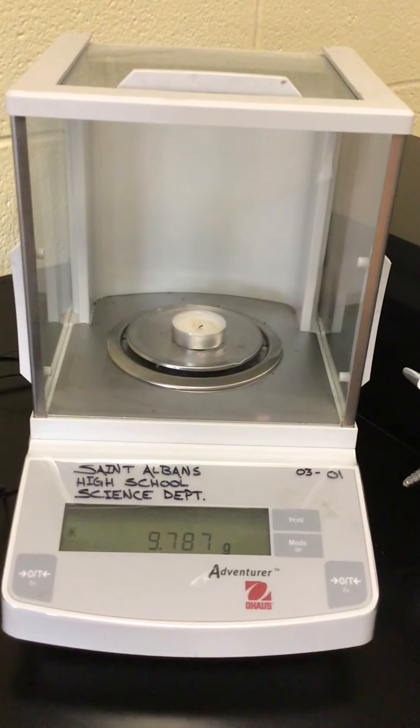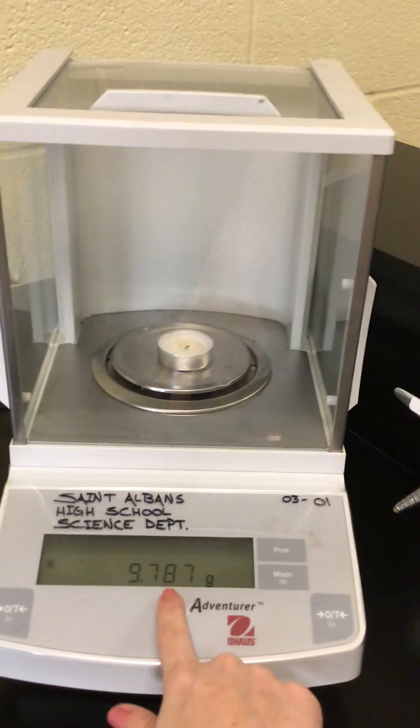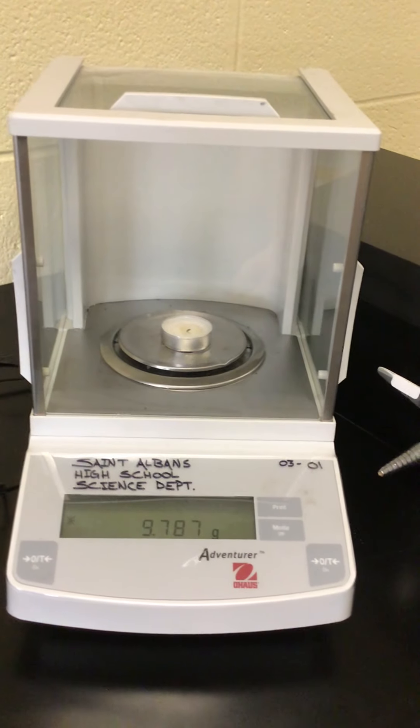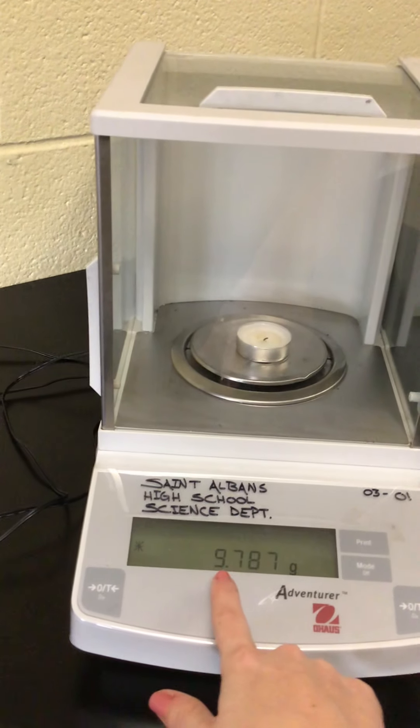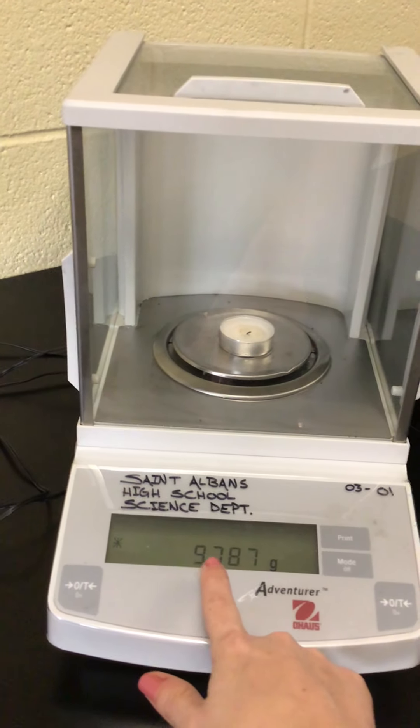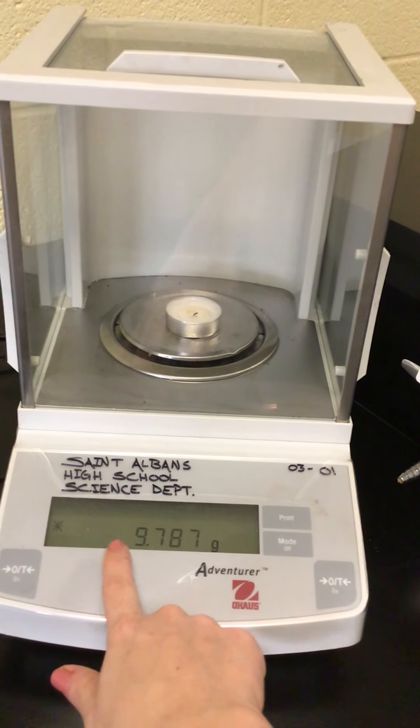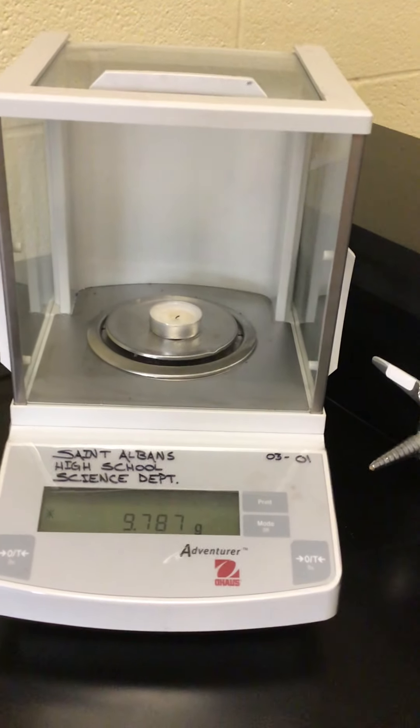So for this one it would probably be best to not use it for measurements that require more specific than a hundredth of a gram or this decimal place right here. So if I were to measure this out to the nearest hundredth of a gram it would be 9.7 and then this 8 would round up to a 9 so it would be 9.79 grams that I would record on my paper.